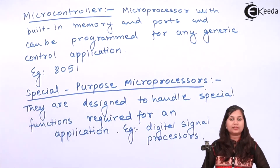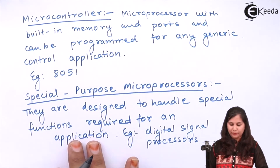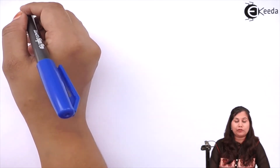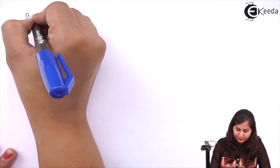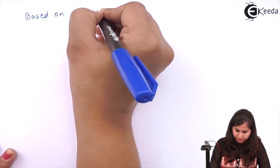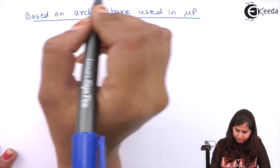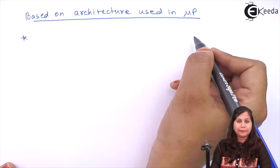That was the classification on the basis of application of the microprocessor. The third classification is on the basis of the architecture used to design the microprocessor. On this basis, microprocessors are classified into two categories.